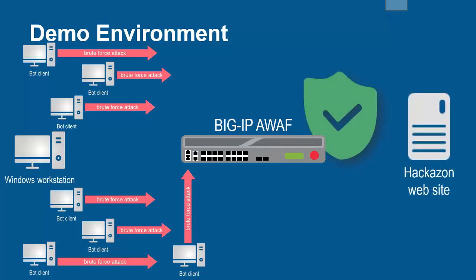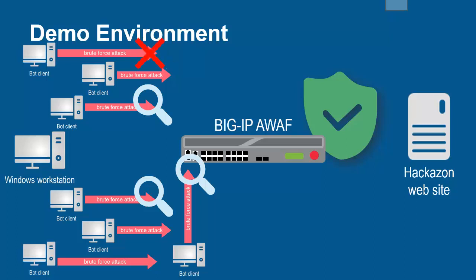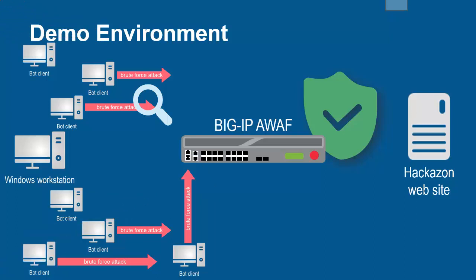The BIG-IP system, using its full proxy architecture, examines every request and can identify when a distributed brute force attack is underway, and begin challenging all login requests and block the requests from the botnet before they're sent to the backend web servers.